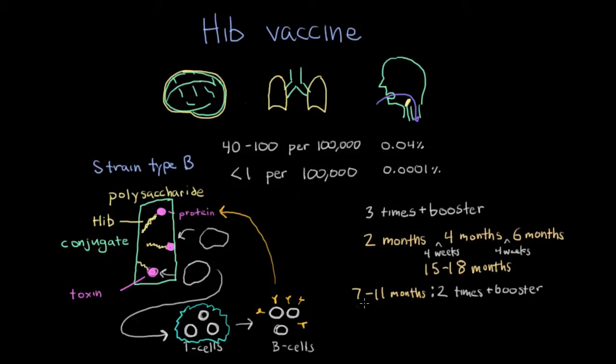If the child is 12 to 14 months old, then they'll only need one shot plus the booster. And if the child has missed all the opportunities to get these regular shots, so if they're around 15 months to five years old, then all they need is just one shot, which would be the booster shot.